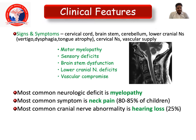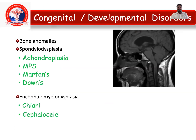The most common neurological deficit would be myelopathy, with the most common symptom being neck pain in 80 to 85% of children. Congenital and developmental bony disorders include spondyloepiphyseal dysplasia such as achondroplasia, mucopolysaccharidosis (MPS), Marfan syndrome, or Down syndrome.